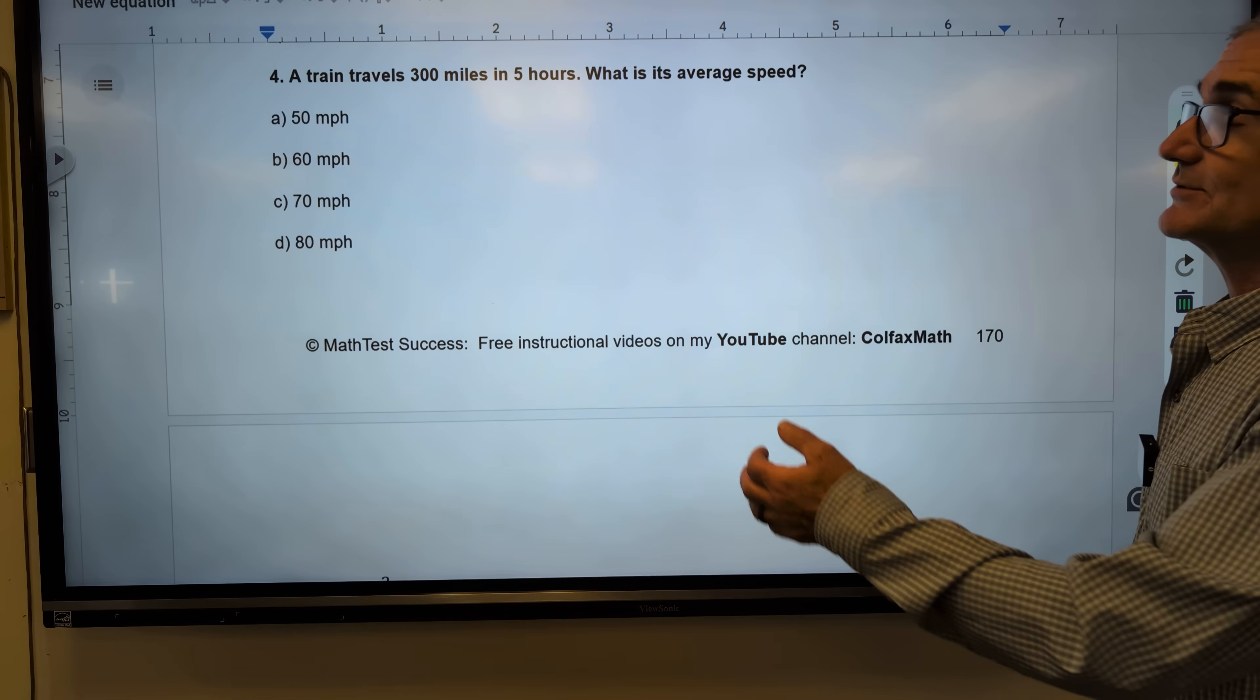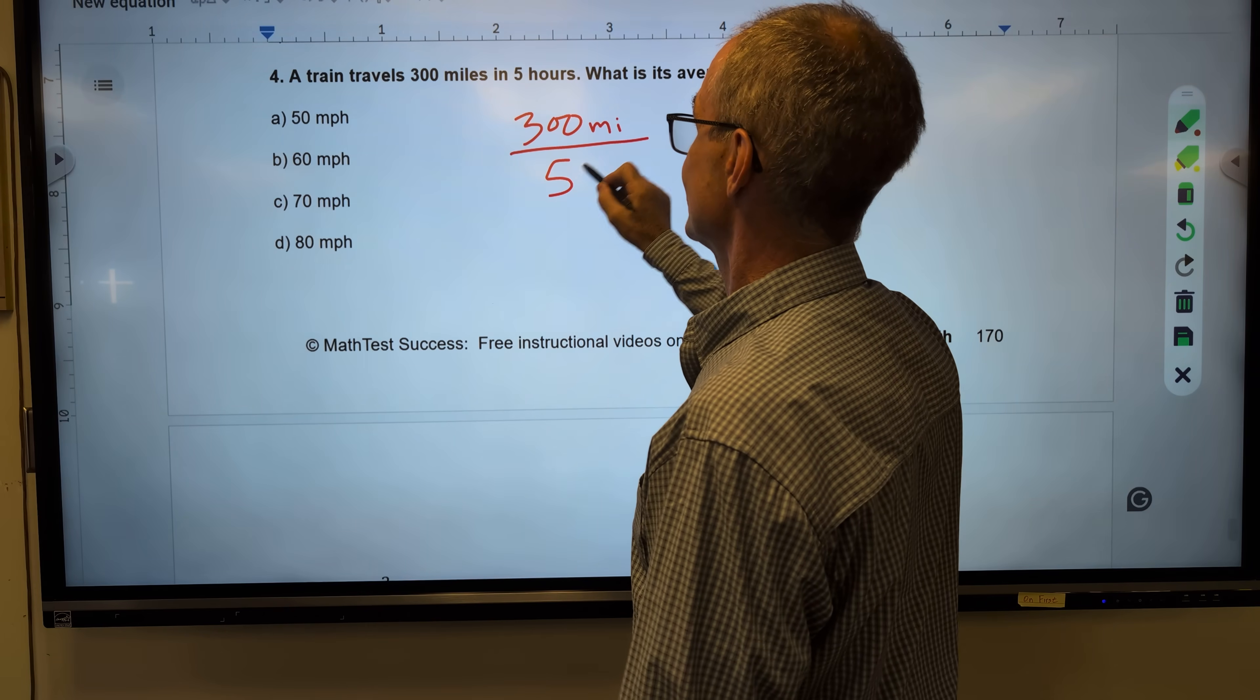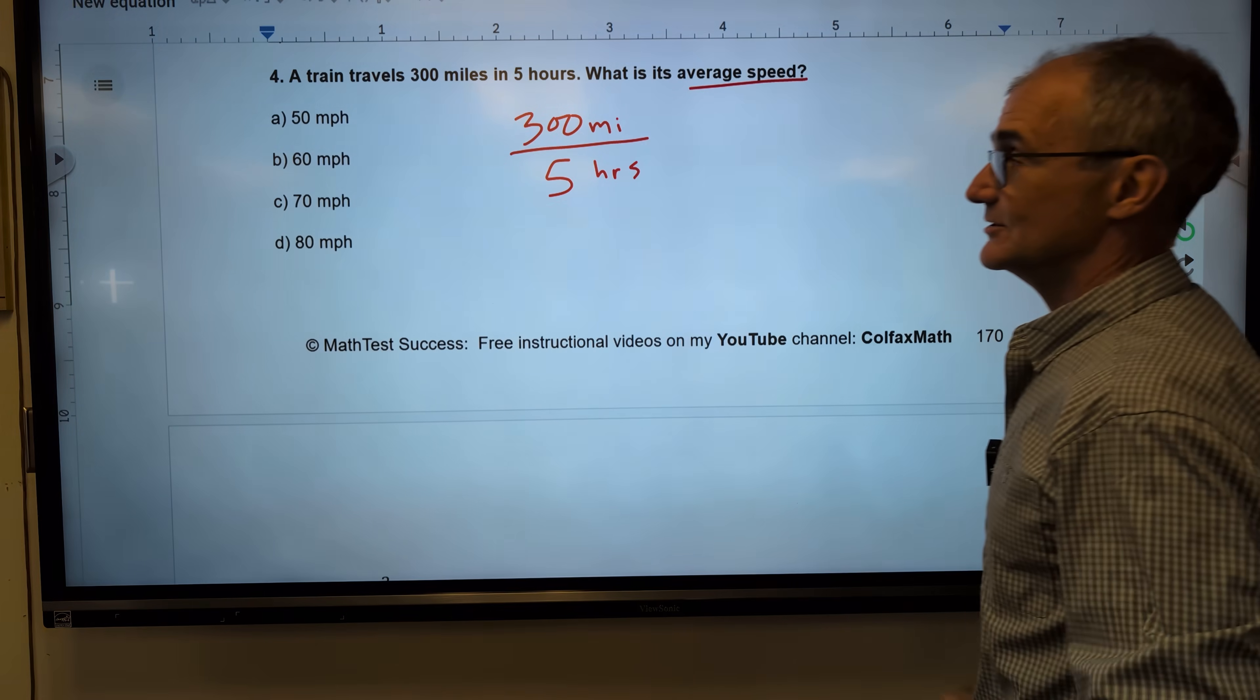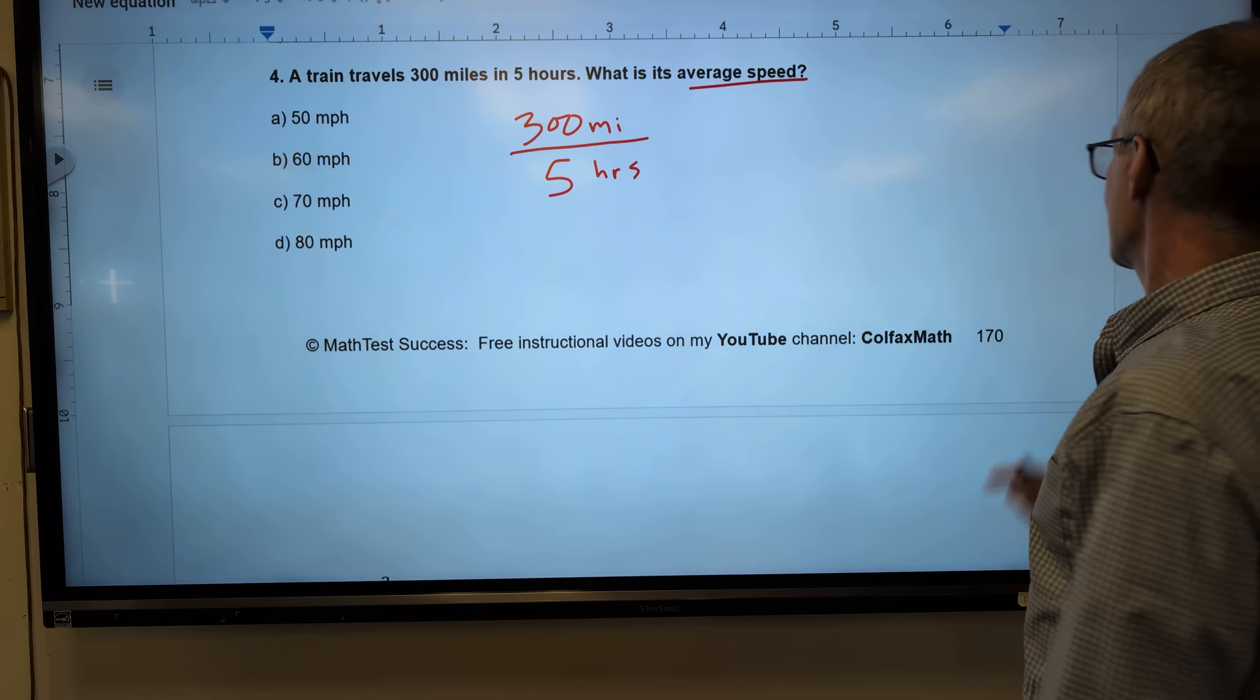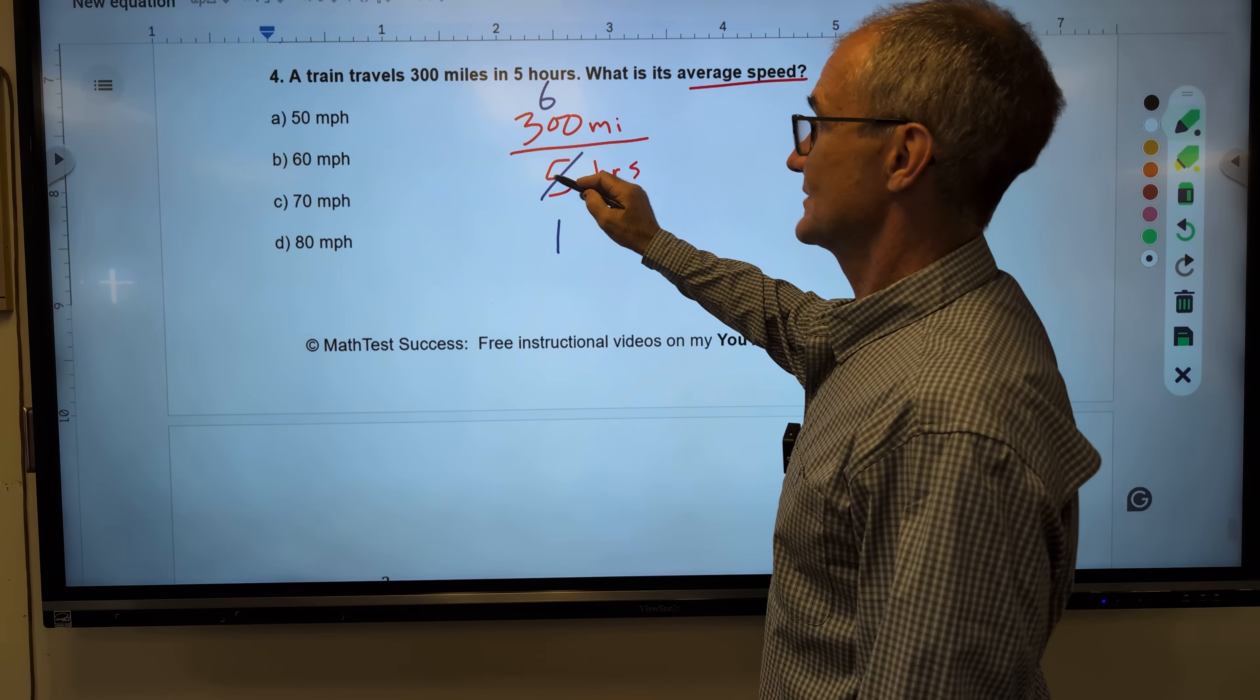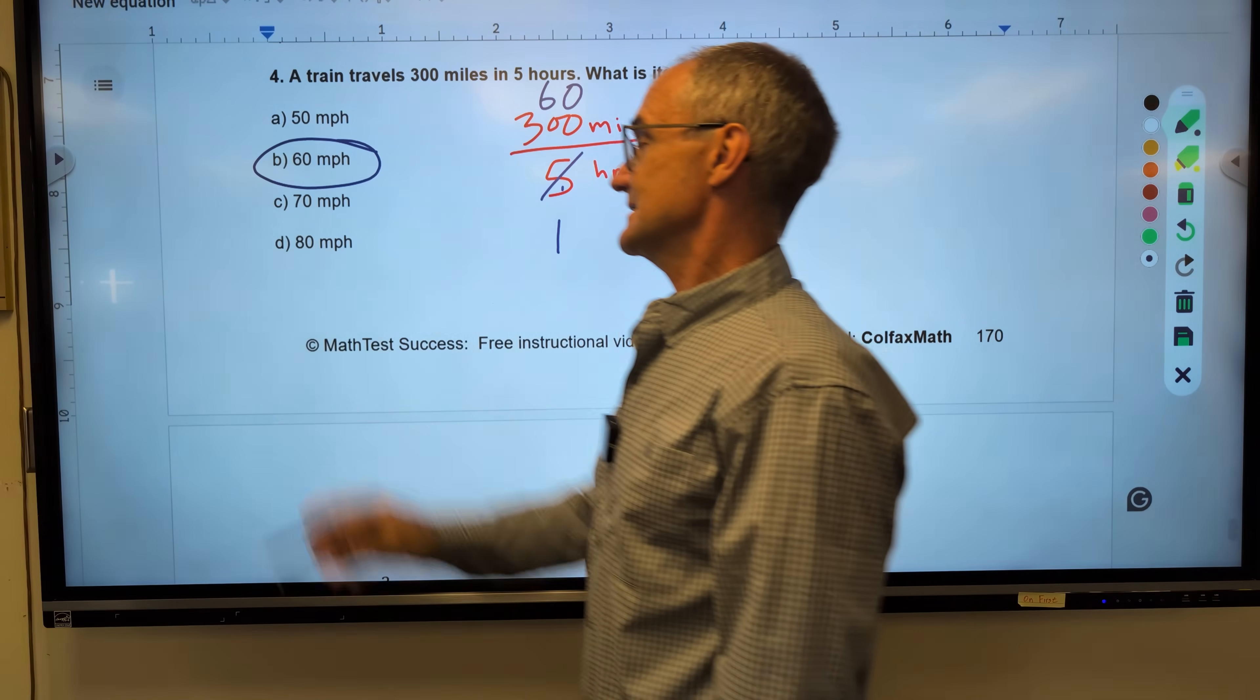Number 4. I have a rate problem here. Guaranteed you'll see one of these. I am traveling 300 miles in 5 hours. What is the average speed? I still want miles per hour. I look up here. All my answers are miles per hour. I don't have to multiply by distance or time or anything. All I need to do is reduce that fraction. 5 goes into 5 one time. 5 goes into 300. Or 5 goes into 30 six times. Into 300 60 times. I still have miles per hour. It is just a reduced fraction. 60 miles per hour. Answer B.